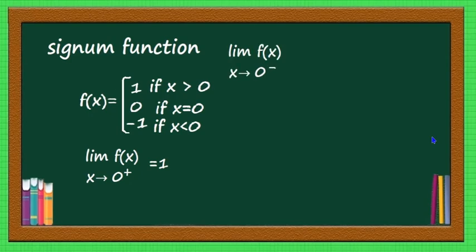And limit x tends to 0- of f(x): 0- means slightly less than 0, and when x < 0, f(x) = -1. Therefore limit x tends to 0- of f(x) = -1. And f(0) = 0. You can observe that the right-hand limit, left-hand limit, and f(0) are all different.